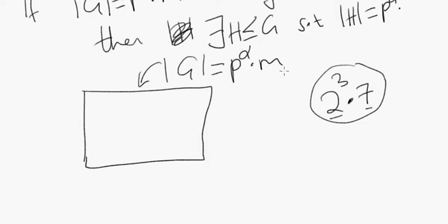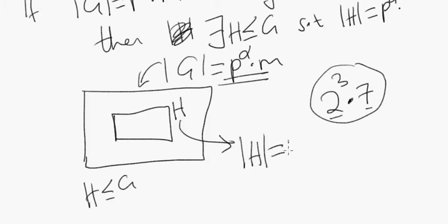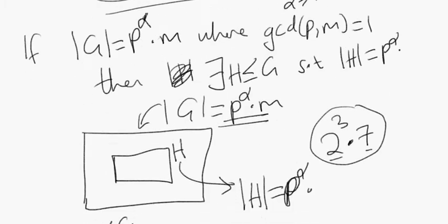This would be an example of a group of the form p to the alpha times m. The name for this is called Sylow subgroups, but we'll find out eventually. So as long as we have a group of this form, we are guaranteed there's going to be some subgroup H of G such that the order of H is p to the alpha.